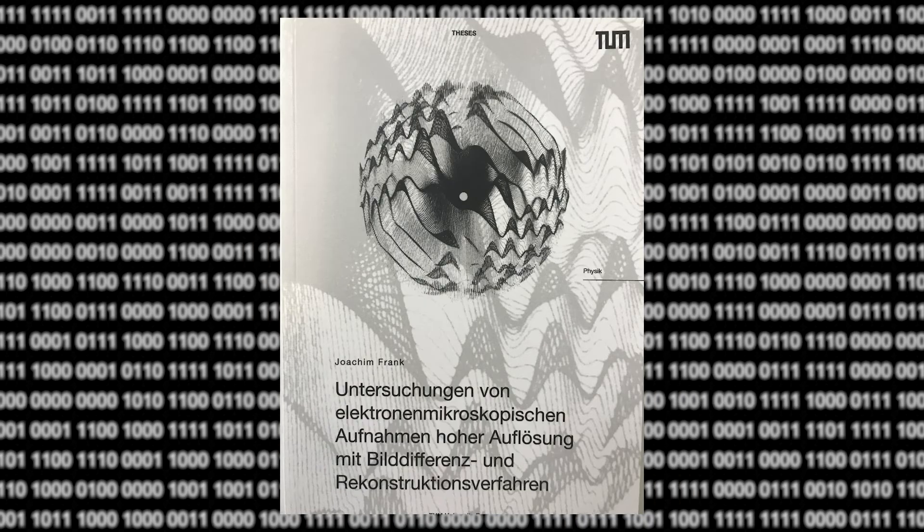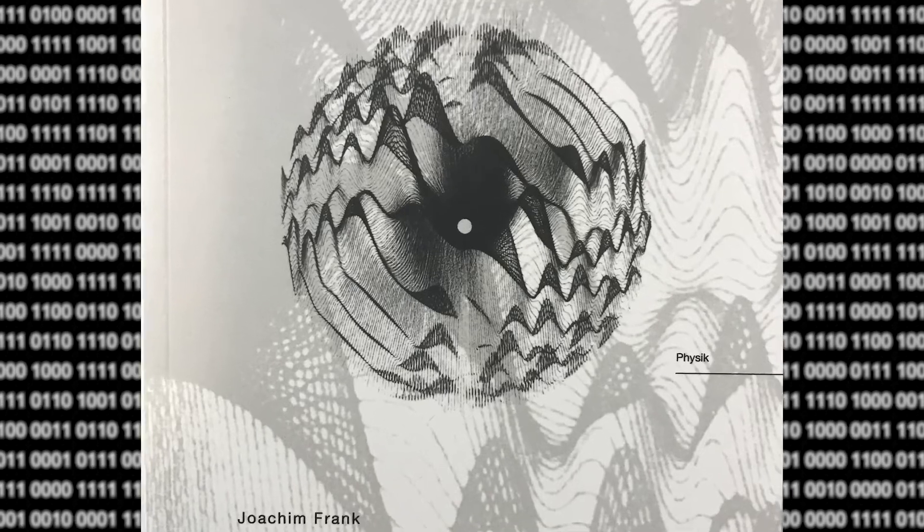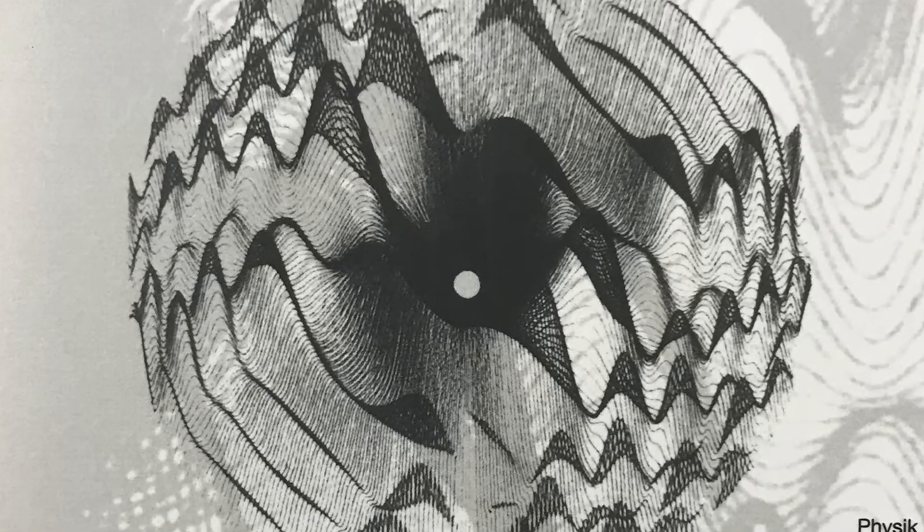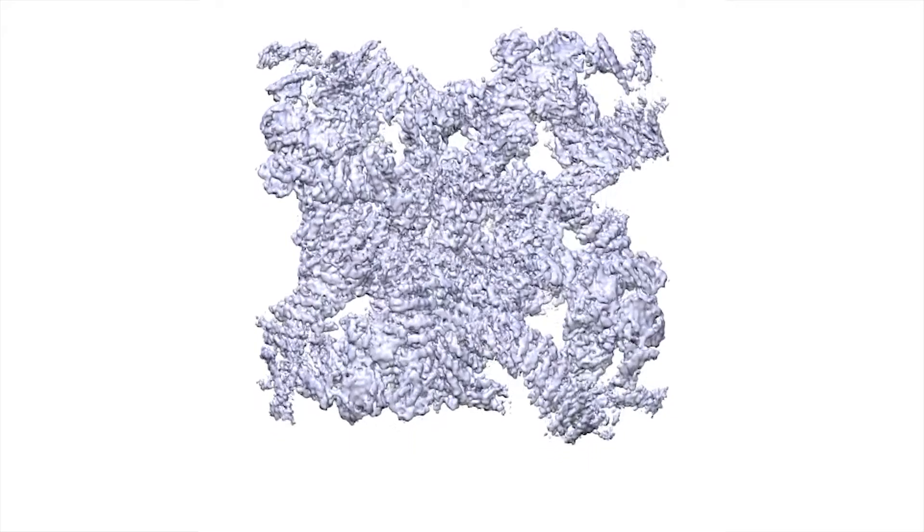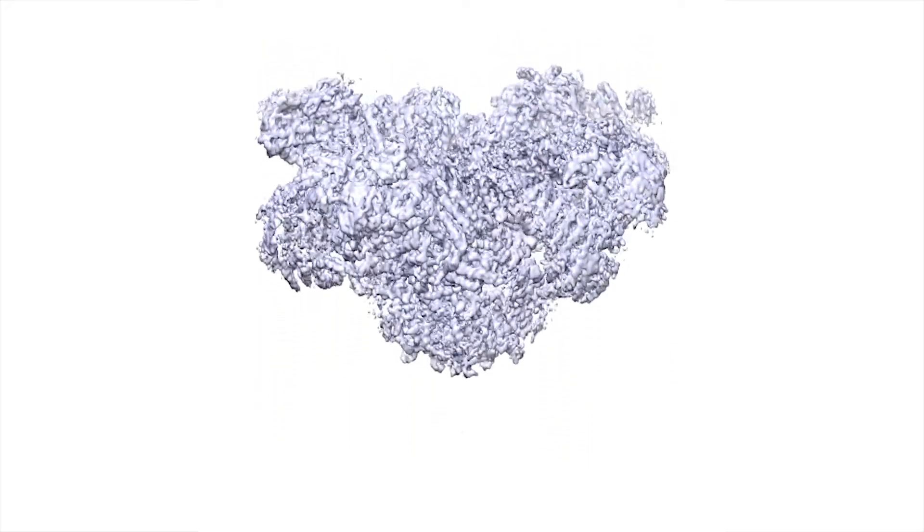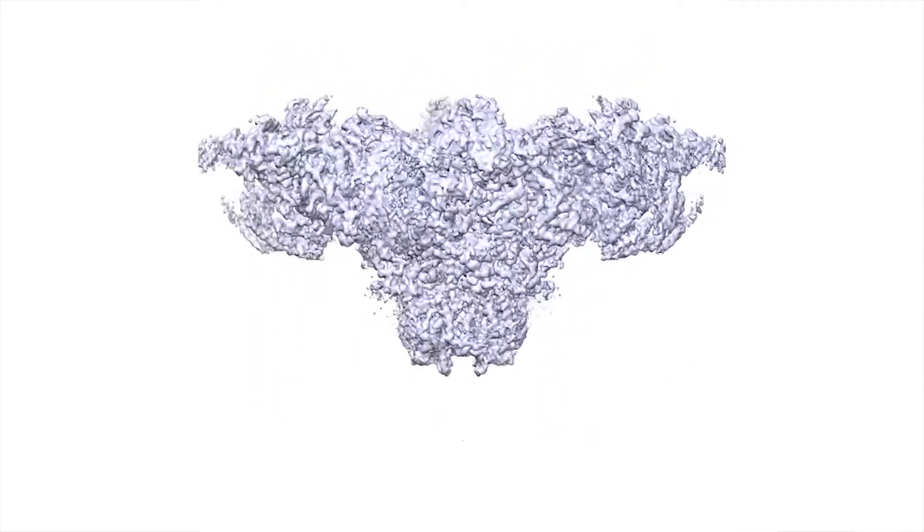We have thousands of images and each image depicts the molecule in a different orientation. By programs that I initially developed in the 1970s and 80s it is possible to combine the images into a three-dimensional structure.